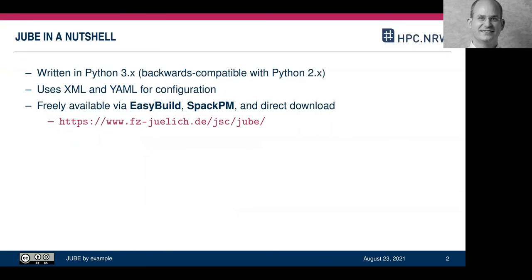JUBE itself is written in Python, so you need a working Python environment. It's written in Python 3 but is backwards compatible with Python 2, making it easy to execute on any system. It uses XML for configuration, and in its newest version it also understands YAML as a configuration language. All the slides and configurations presented here are XML-based.